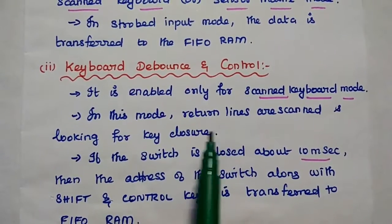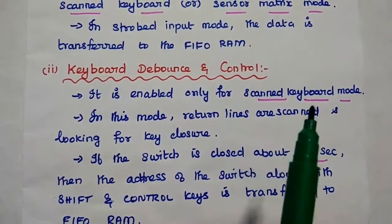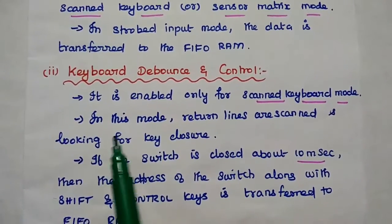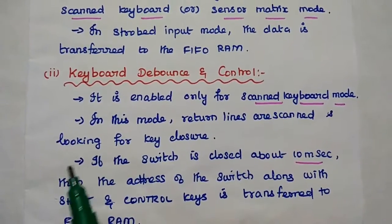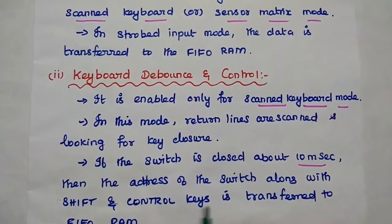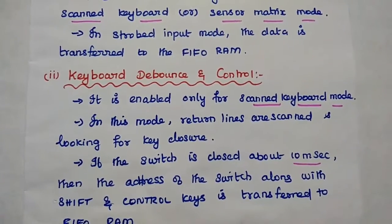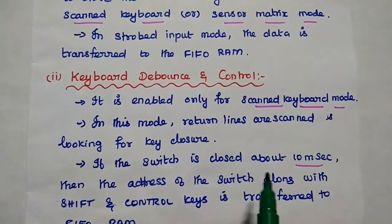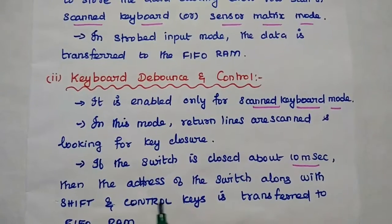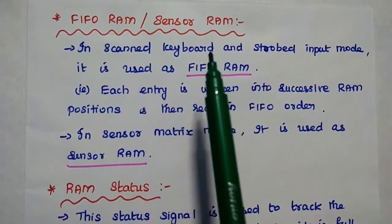The keyboard debounce and control unit is enabled only for scanned keyboard mode, not for sensor matrix mode. In this mode, return lines are scanned and checked for key closure. If the switch is closed for about 10 milliseconds, then the address of that switch along with the shift and control keys is transferred to FIFO RAM — it waits 10 milliseconds before transferring that address to the FIFO RAM.